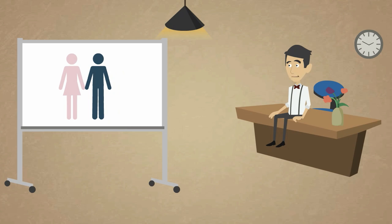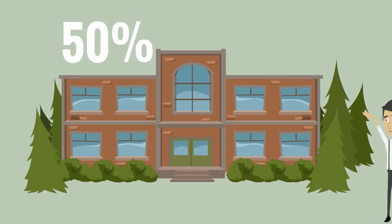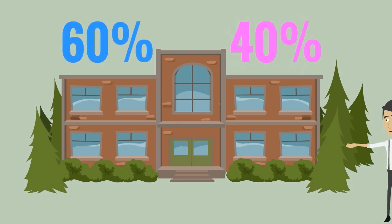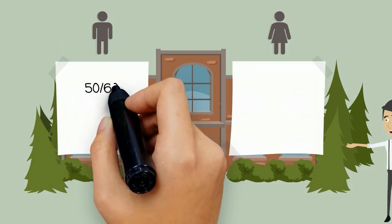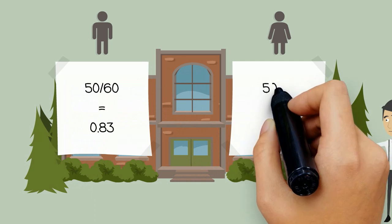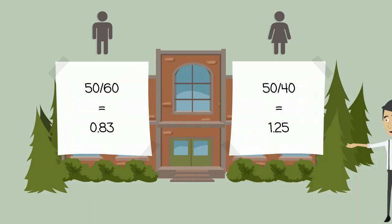Let me give you a practical example. A university has 50% male students and 50% female students. In a study, 60% male students and 40% female students were interviewed. The men in the sample get a factor of 0.83 and the women get a factor of 1.25.